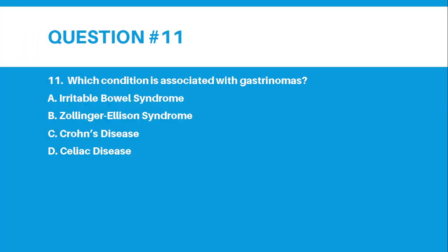Number 11. Which condition is associated with gastrinomas? A. Irritable bowel syndrome, or B. Zollinger-Ellison syndrome.